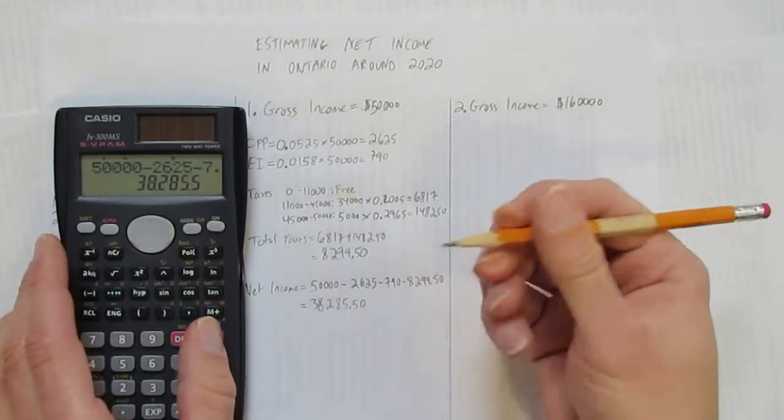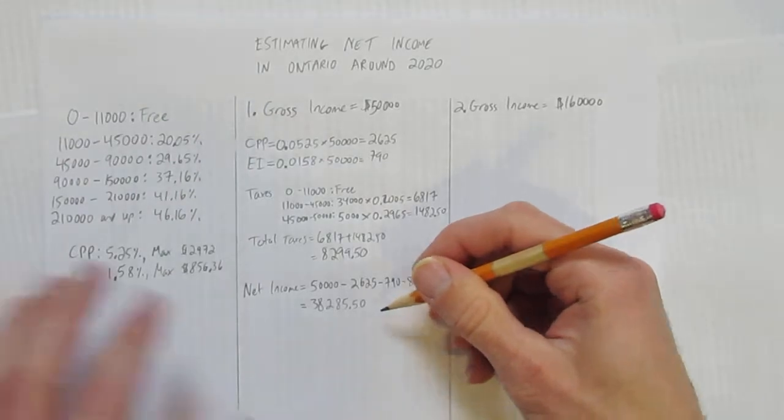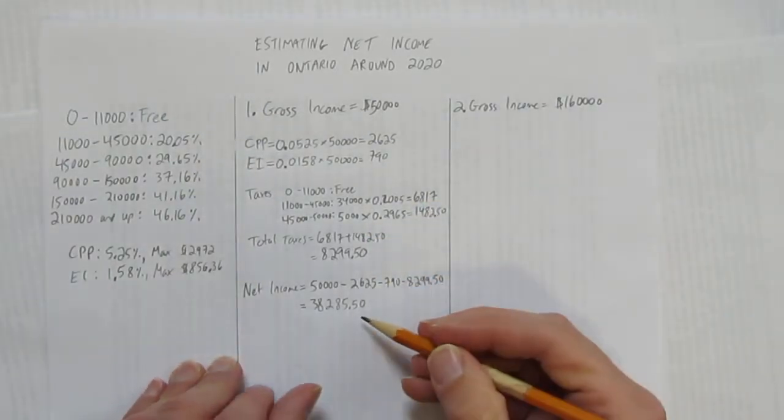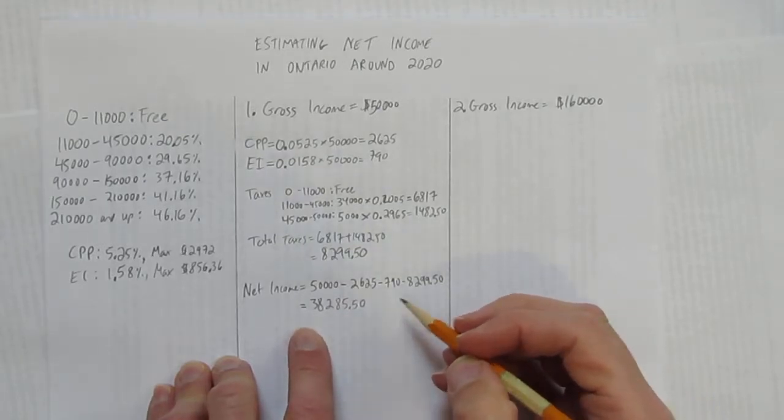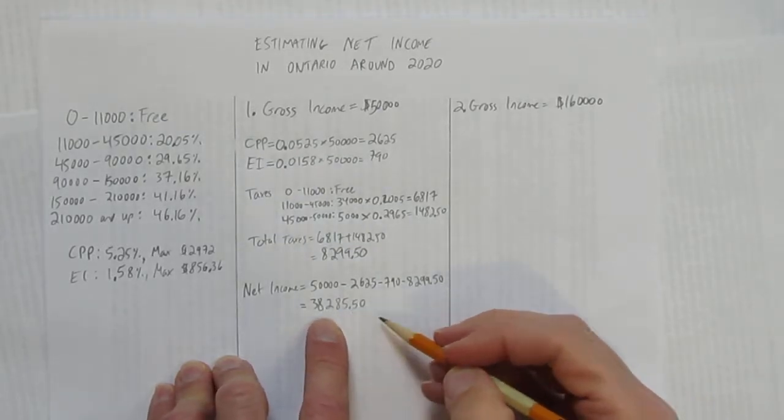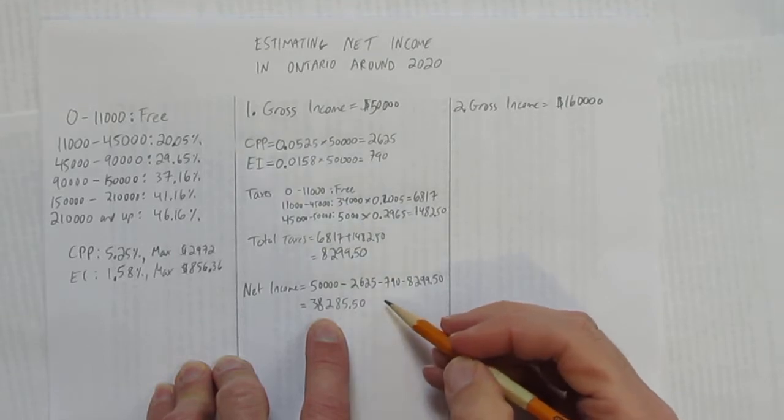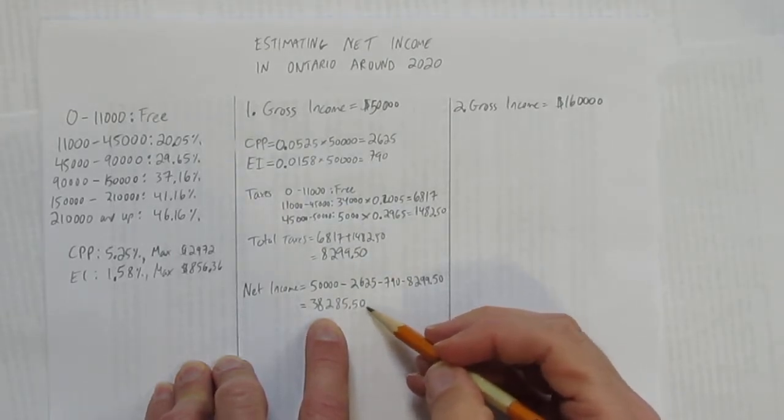$50,000 minus $2,625 minus $790 minus $8,299.50 is $38,285.50. If it was a word problem, you need a therefore statement. But I didn't ask it as a word problem. We're just showing the work here. So at the end of all that, you have $38,285.50.